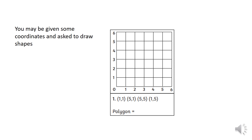You may also be given some coordinates and asked to draw shapes. Down here are four coordinates to plot: (1, 1), (5, 1), (5, 5), and (1, 5). Plotting all four of these points and connecting them, we can see that we have a square.